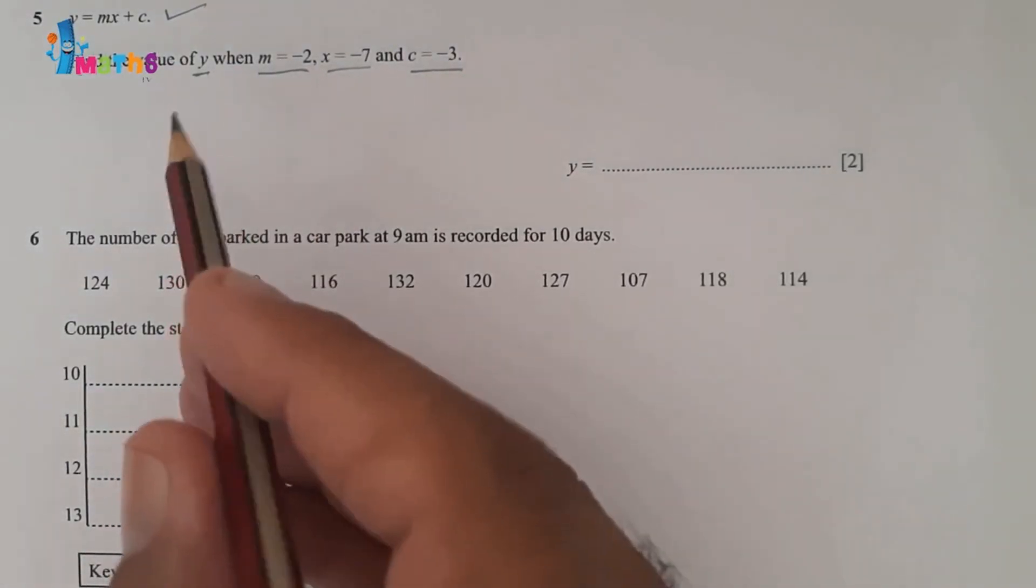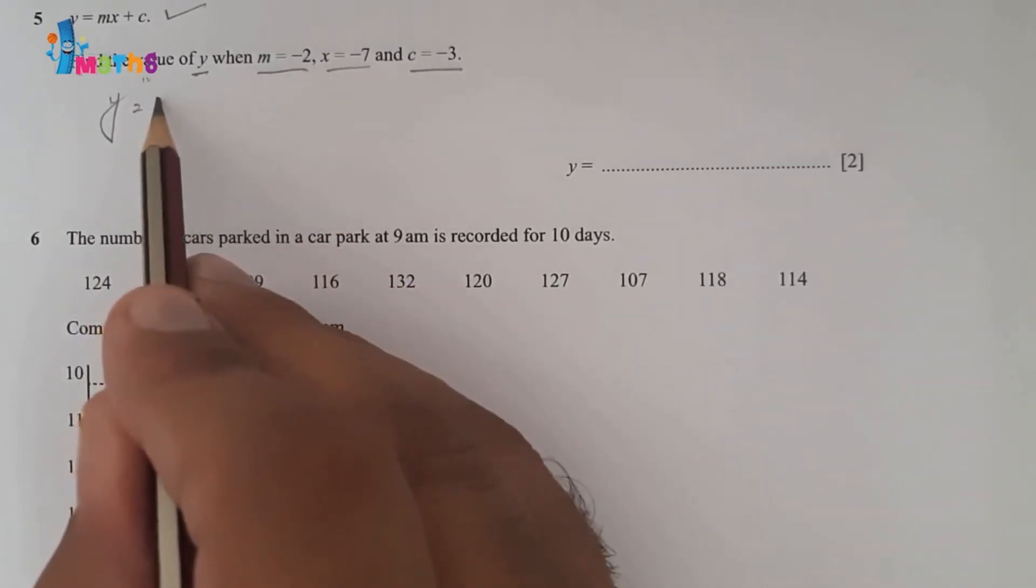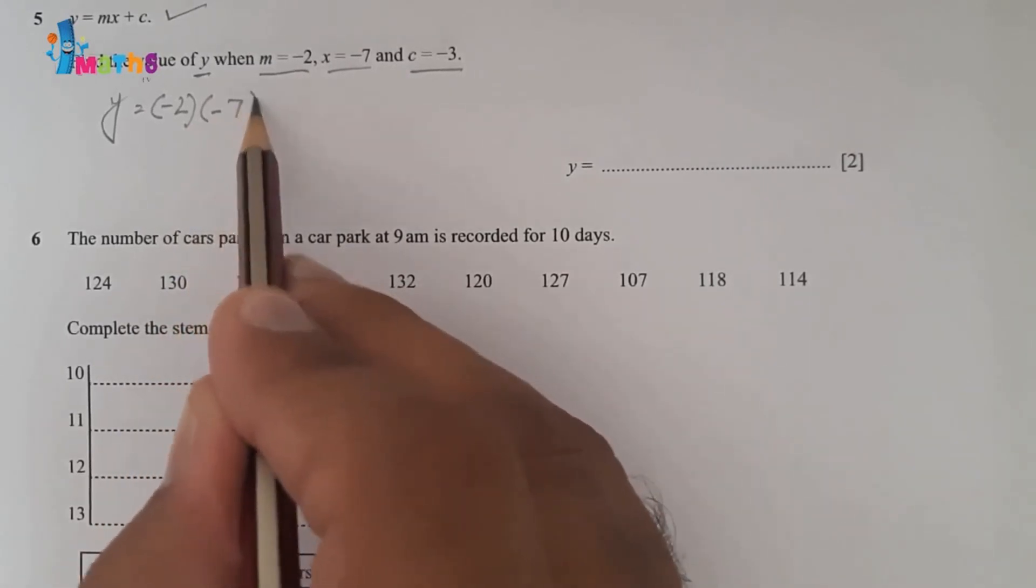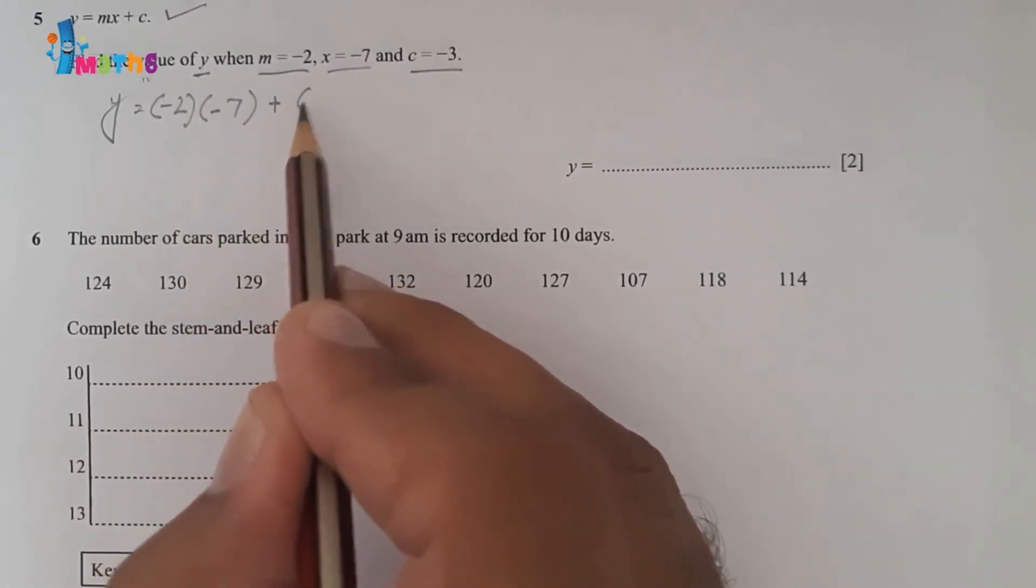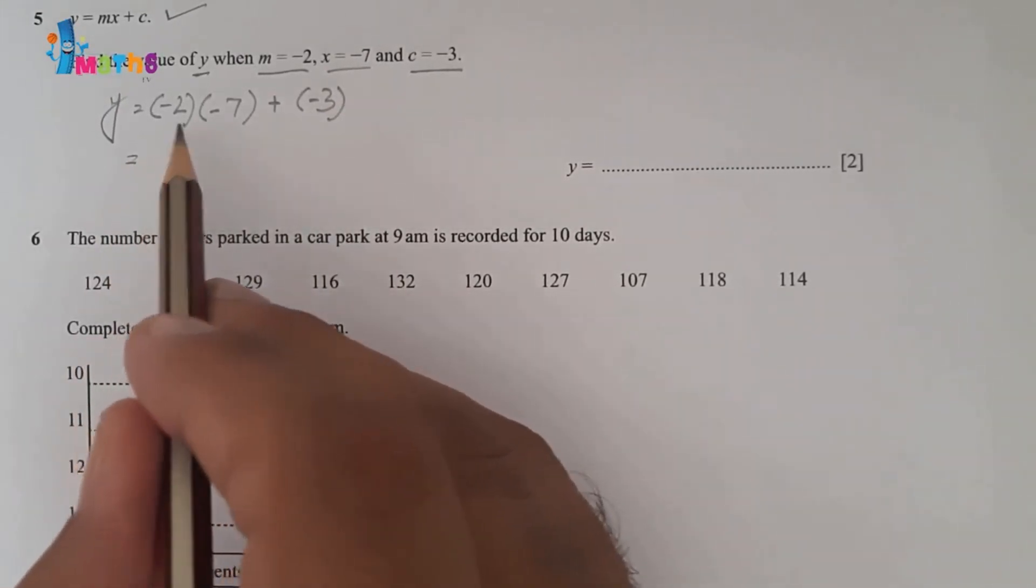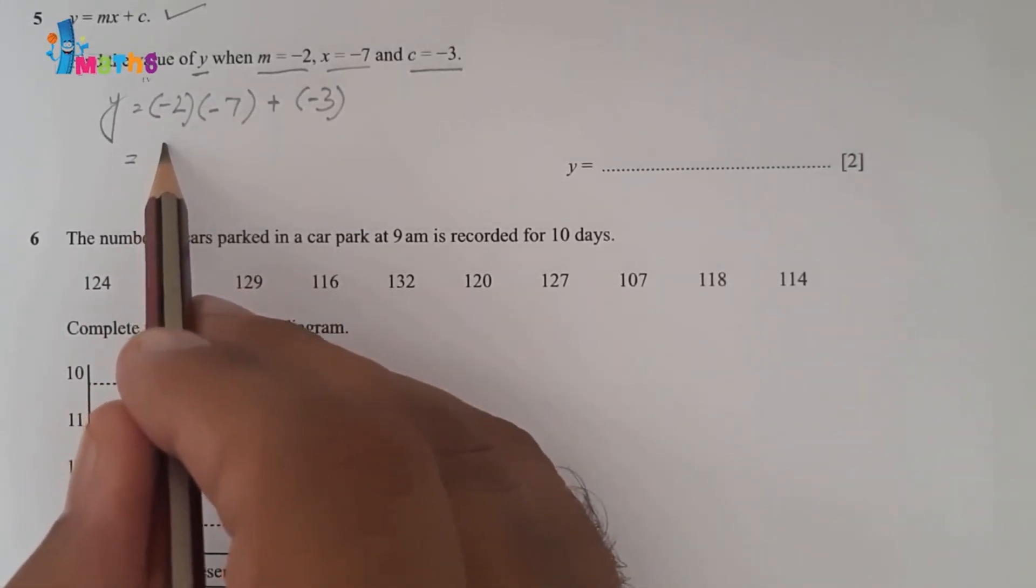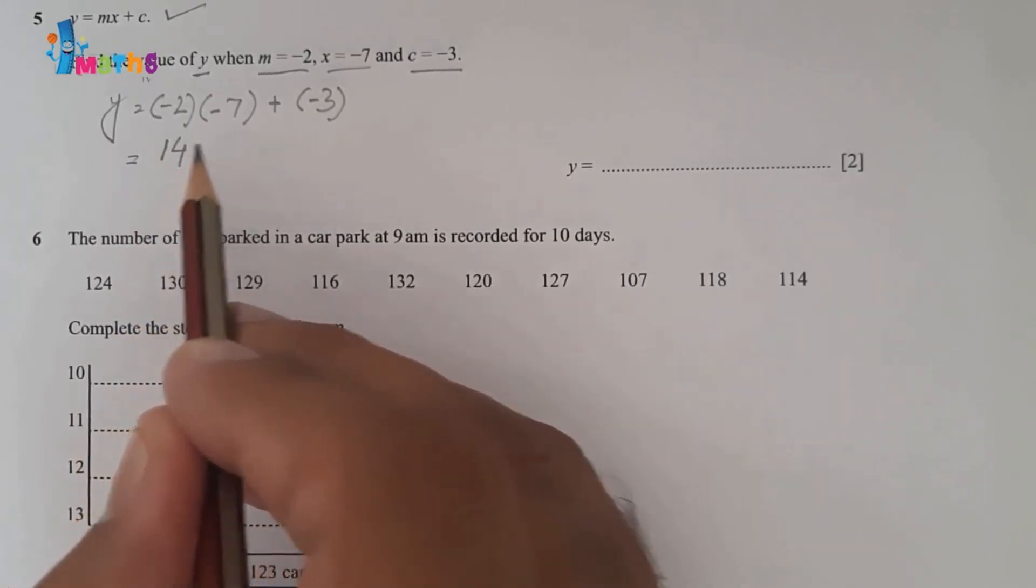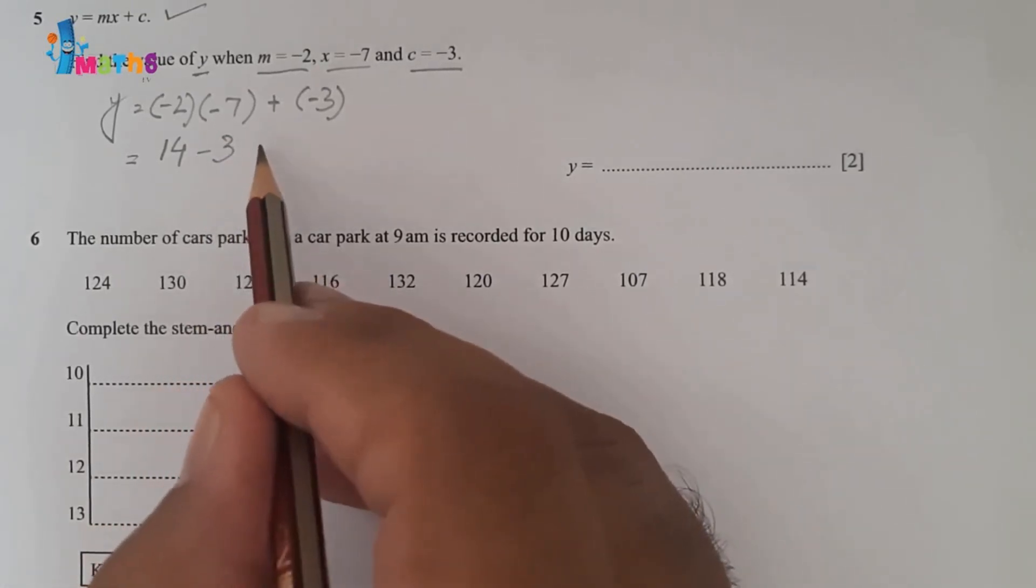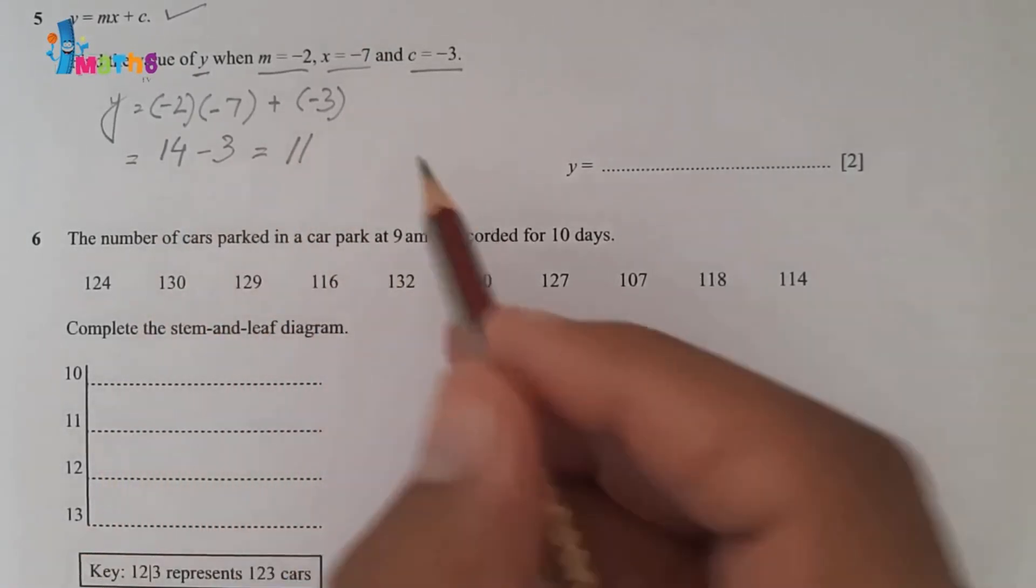y equals mx plus c. So we will write y equals m, which is minus 2, times x, which is minus 7, plus c, which is minus 3. We will replace values in brackets so that we are not going to make any mistake. Minus 2 times minus 7 will be 14, plus 14 minus 3. This will be plus 11. So y equals 11 is the answer.